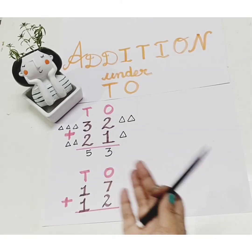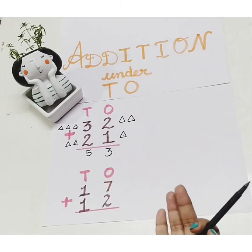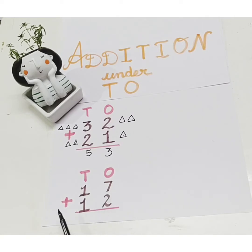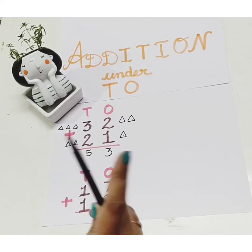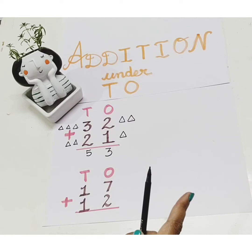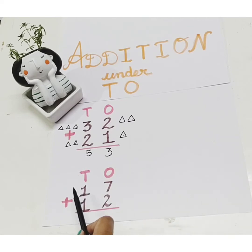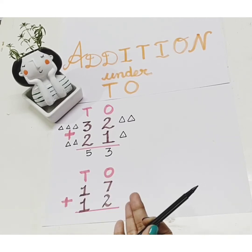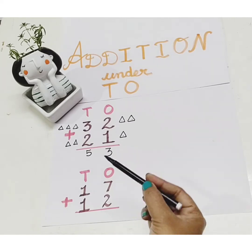Children, now let's do the next sum: 17 plus 12. Remember children, with double digit addition we always start from the right side.